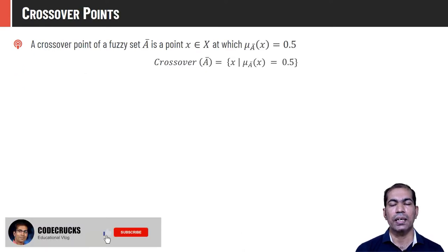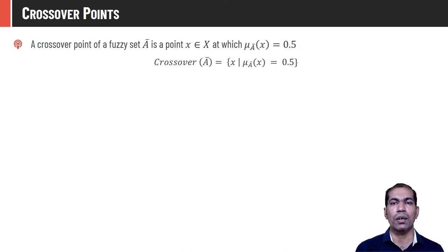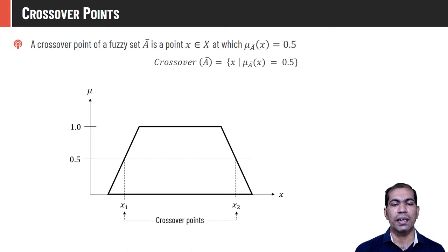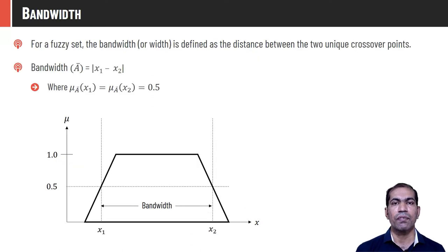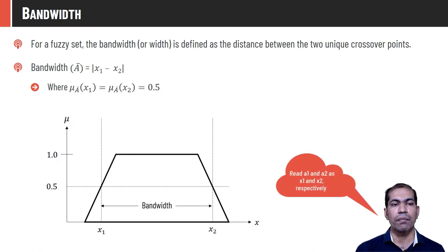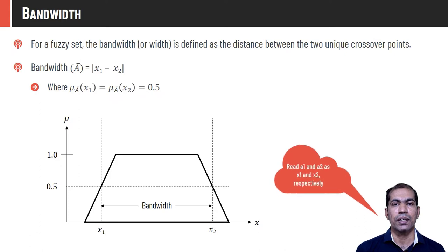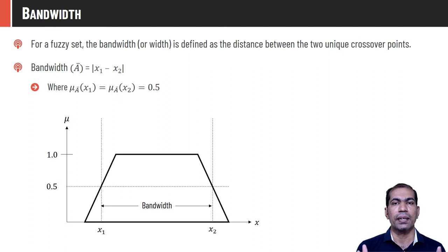As seen in the diagram, points x1 and x2 have membership value 0.5 — these are the crossover points. Bandwidth or width of the fuzzy set is the difference between two crossover points: bandwidth(Ā) = |x1 − x2|, where μ_Ā(x1) = μ_Ā(x2) = 0.5. A fuzzy singleton is a fuzzy set whose core is a single point — exactly one element has membership value 1.